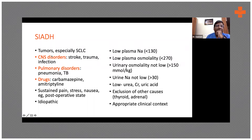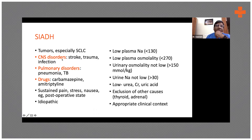So why CNS disorders and lung disorders? Because they have receptors which can detect the changes in volume status. There are some baroreceptors in the lungs, and there are some receptors in the brain which can pick up these signals. So anything going wrong in the brain or lungs can affect ADH secretion.